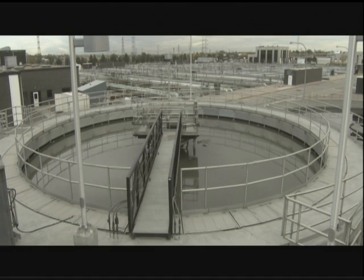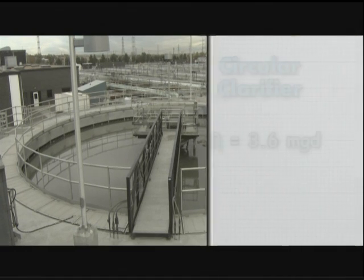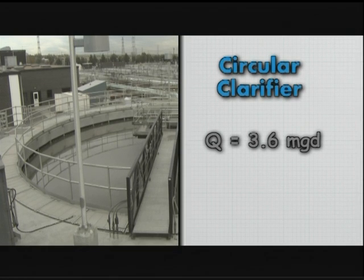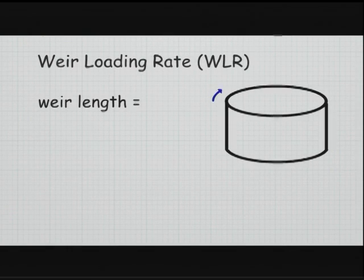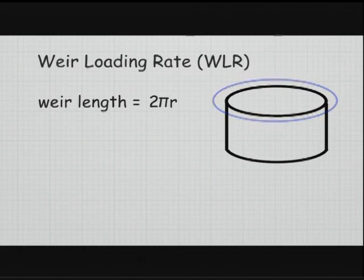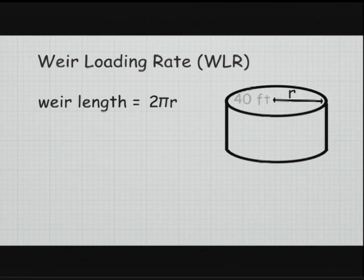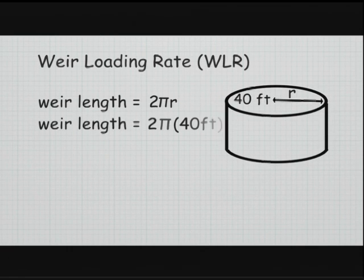Let's look at an example of a circular clarifier where the flow, or Q, is 3.6 million gallons per day and the diameter of the clarifier is 80 feet. To determine the weir loading rate, we first need to determine the length of the weir. The length of the weir is equal to the circumference of the circular clarifier, or 2 times pi times the radius of the tank.